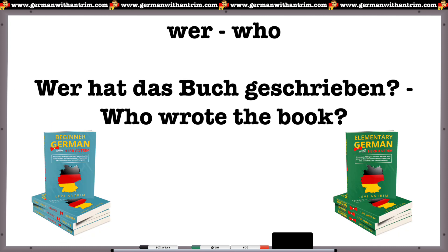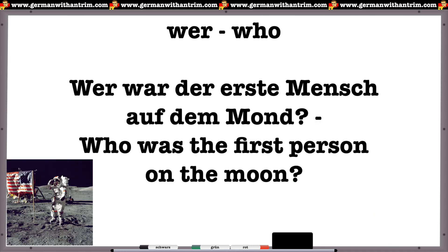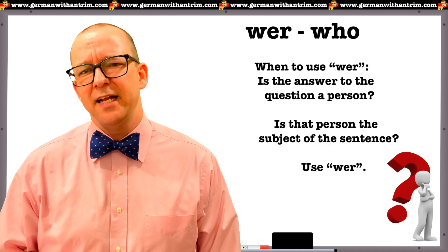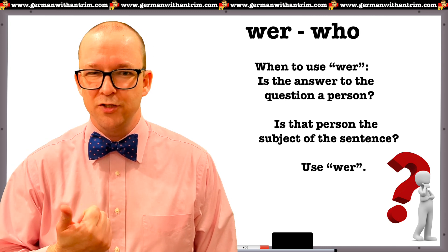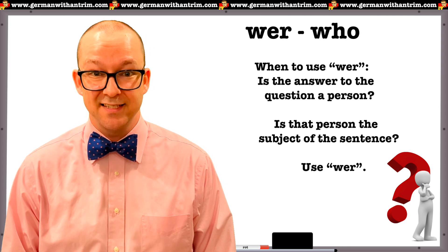More examples: Wer hat das Buch geschrieben? (Who wrote the book?) Wer kann mir helfen? (Who can help me?) Wer war der erste Mensch auf dem Mond? (Who was the first person on the moon?) When deciding whether you need Wer, ask two questions: Is this asking for a person? And is that person the subject of the sentence? If yes to both, you need Wer.